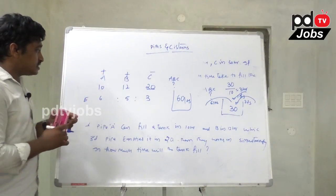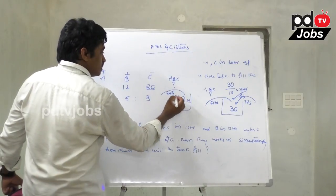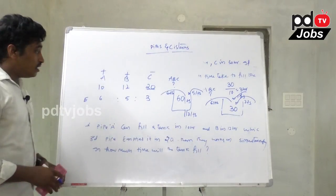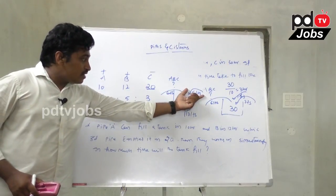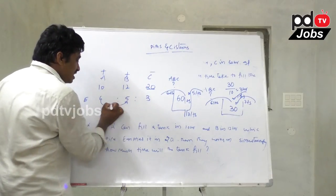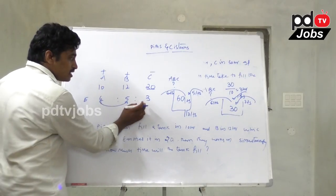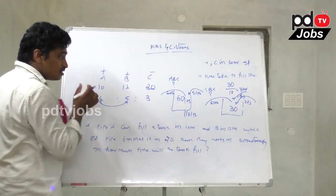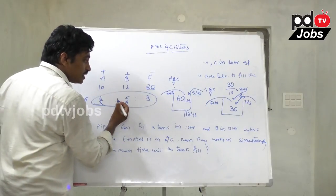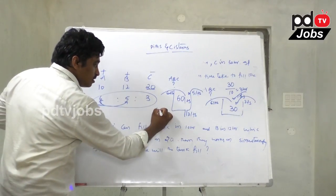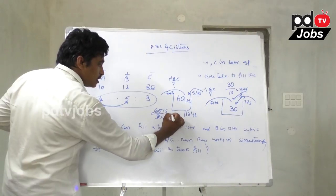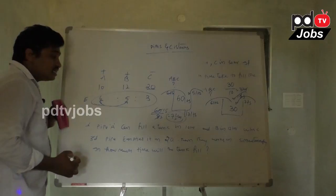Pipe A efficiency: 60 ÷ 10 = 6 liters per hour. Pipe B efficiency: 60 ÷ 12 = 5 liters per hour. Pipe C empties at 60 ÷ 20 = 3 liters per hour. Net per hour: 6 + 5 − 3 = 8 liters. Time to fill 60 liters = 60 ÷ 8 = 7.5 hours, that is 7 hours 30 minutes.